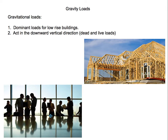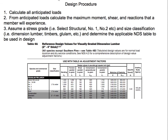The design procedure: first, always calculate all anticipated loads. From those loads, you can calculate the maximum moment, shear, and reaction that a member will experience — in this case, the joists, beams, and girders. Then assume a stress grade. Examples are Select Structural, Number 1, Number 2, Number 3. Select Structural is very strong, and as you go down in grade, defects may cause warping, so the wood is not as strong.